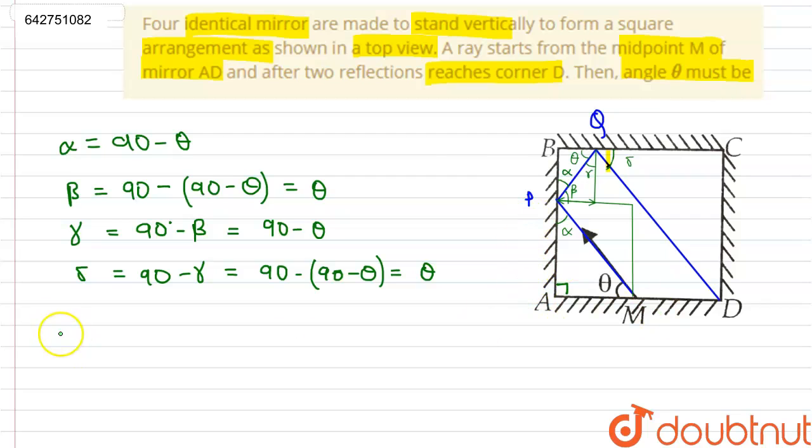After finding all these angles we need to find out tan theta which equals AP by AM. And BP equals A minus AM tan theta which equals A minus (A by 2) tan theta, where AM is the half of AD.